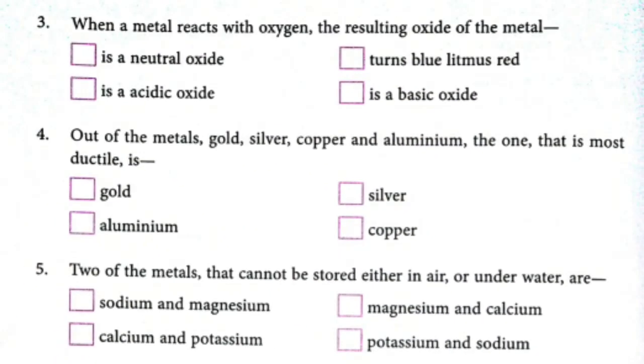Third, when a metal reacts with oxygen, the resulting oxide of the metal is a basic oxide. Fourth, out of the metals gold, silver, copper and aluminum, the one that is most ductile is gold.